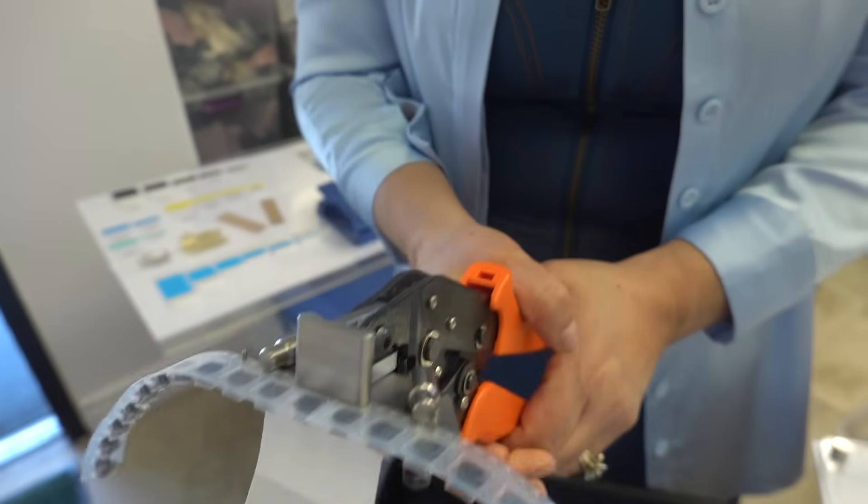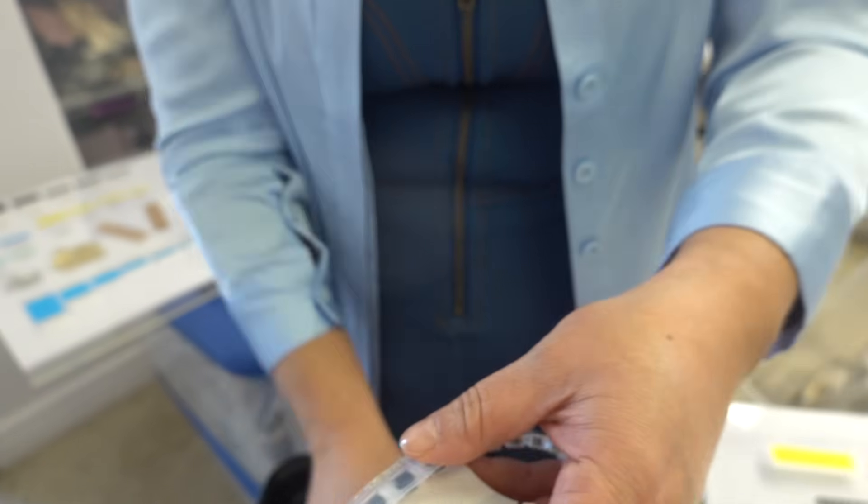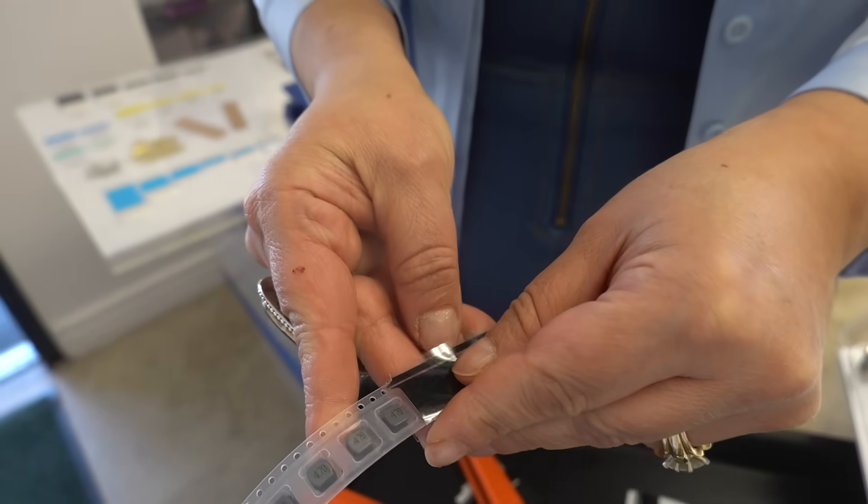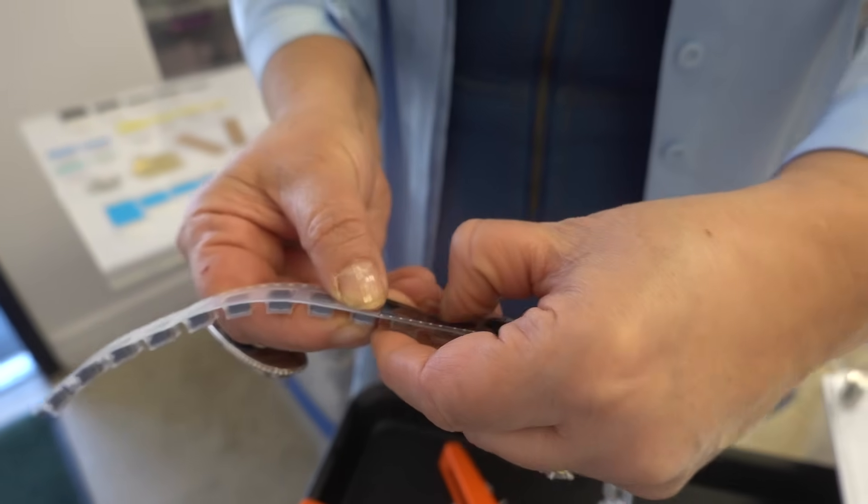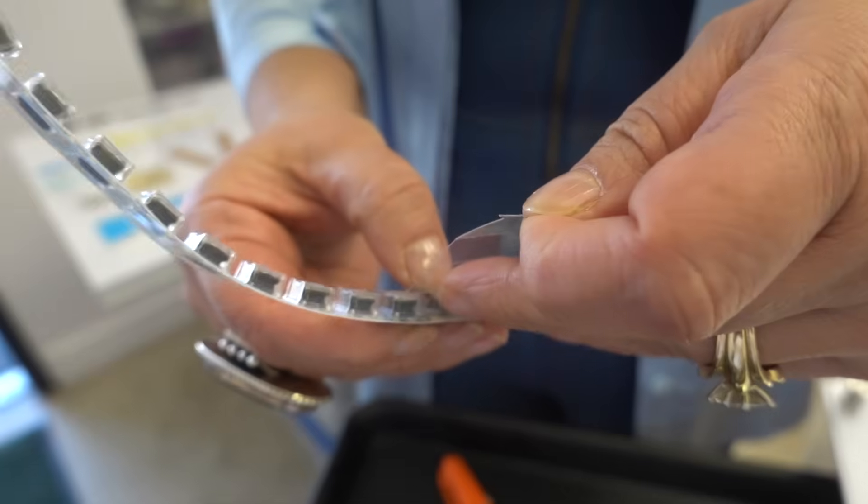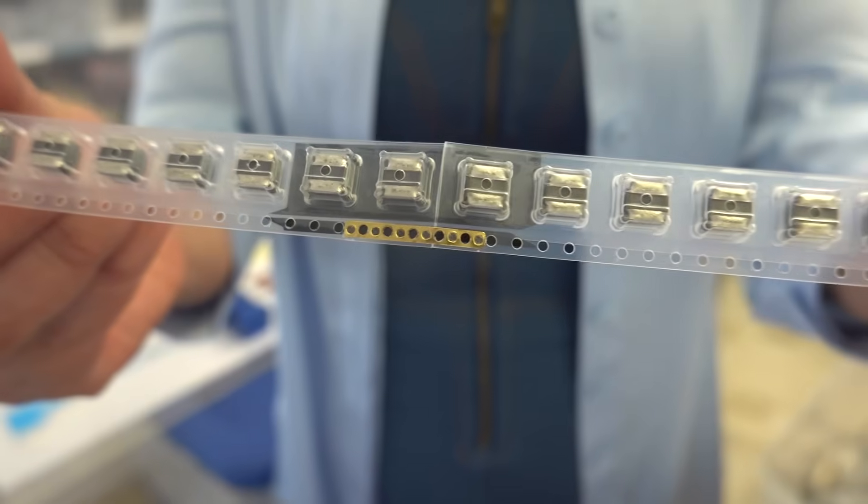We crimp the tool, remove the liner, fold it over, we press firmly, remove the plastic liner and you will have your splice on the top and also your splice on the bottom.